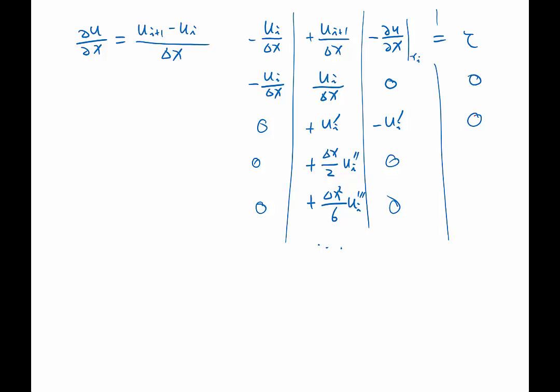The third term no longer cancels. So that is going to be the leading term in the truncation error. That is Ui double prime times half of second derivative of U.